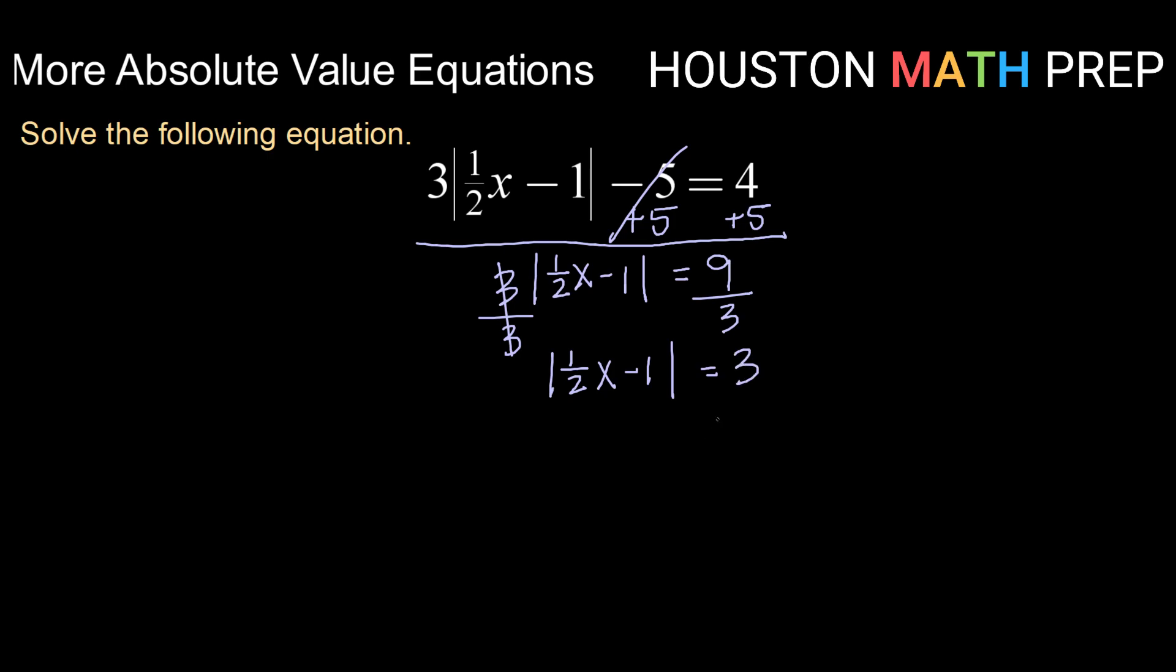Now that we have the absolute value by itself on one side of the equal sign, we can go ahead and split into our positive and our negative versions of the equation. So dropping the absolute value, I have 1 half x minus 1 equals positive 3 and 1 half x minus 1 equals negative 3.